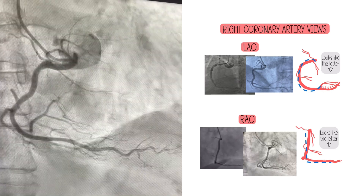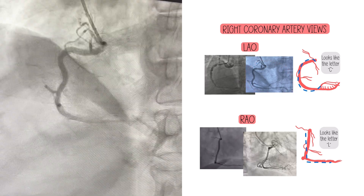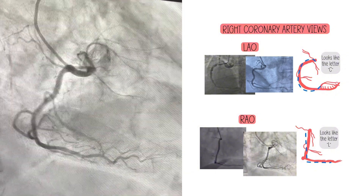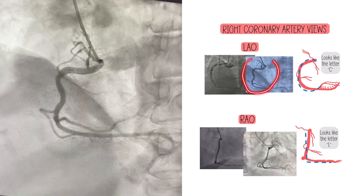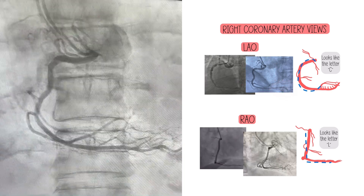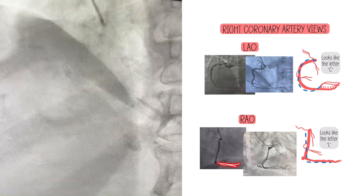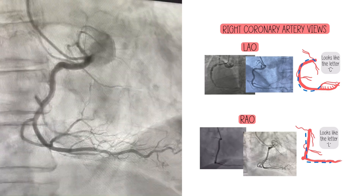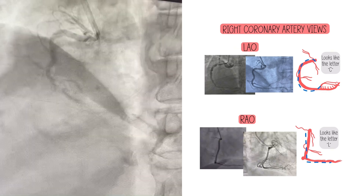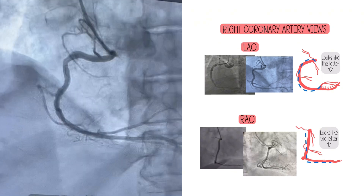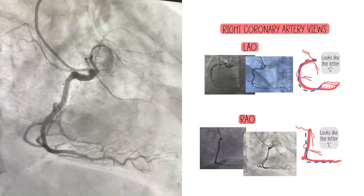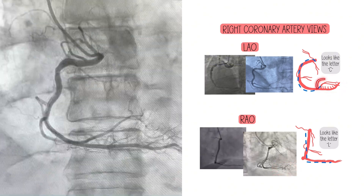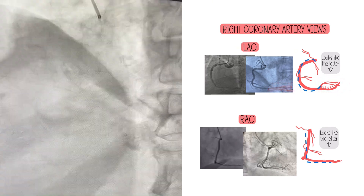Can you identify every single vessel in this picture — the conus, the SA nodal branch, RV branch, PDA, PL? In the proximal segment, maybe. But in the distal segment, you have quite a bit of overlap; several branches are overlapped and hard to distinguish. Remember what we said about the LCA — we can't always identify every single vessel in one view, and that's okay. This is where using a cranial or skewed view might come into play, to separate out that distal bifurcation.